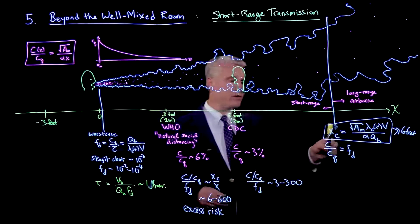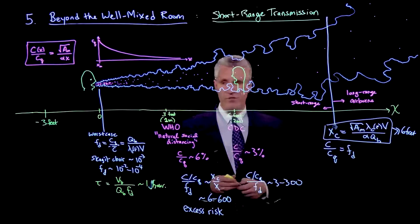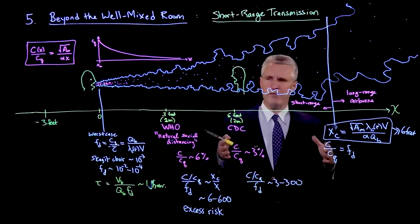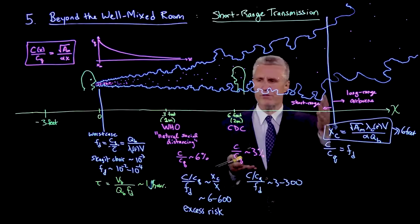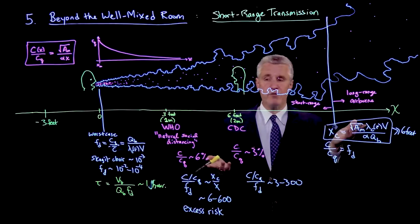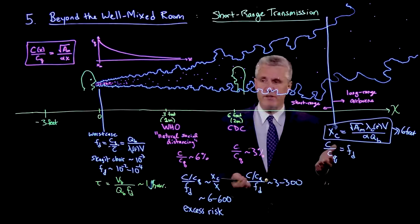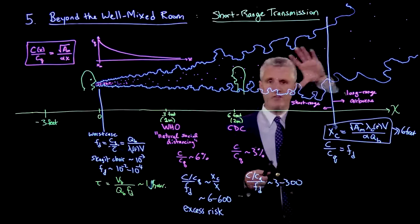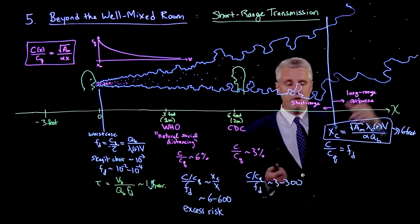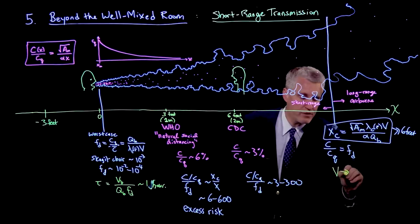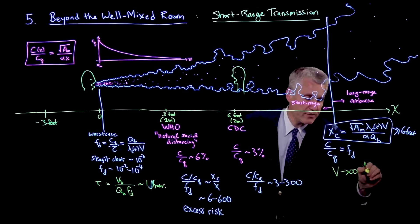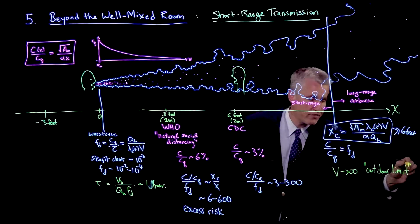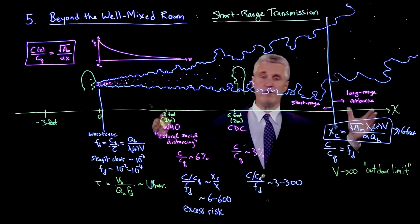Let me make one final comment: where is this crossover point? Notice it scales with volume. You may be wondering, don't we have airborne transmission and short-range transmission outdoors also? Yes, and that is covered by the arguments we're making here. Although these jets can't last forever, we can ask what happens as V goes to infinity—I call this the outdoor limit.